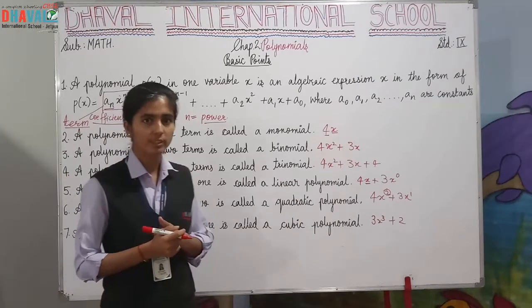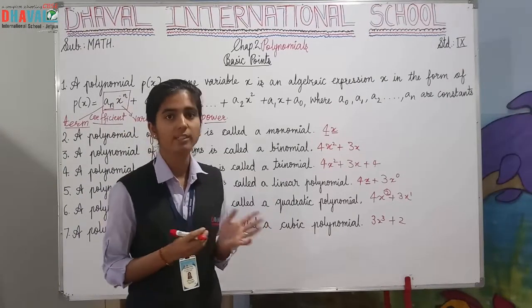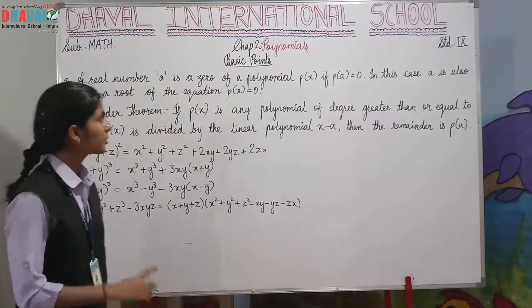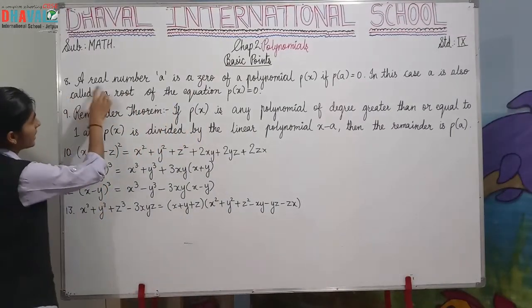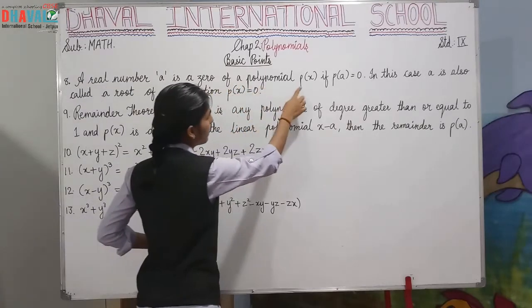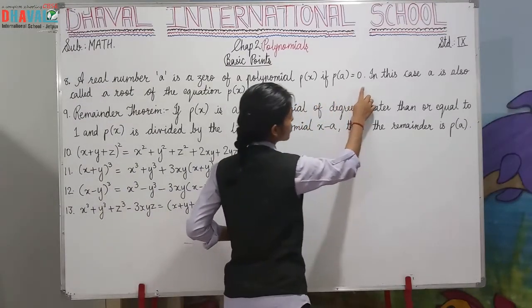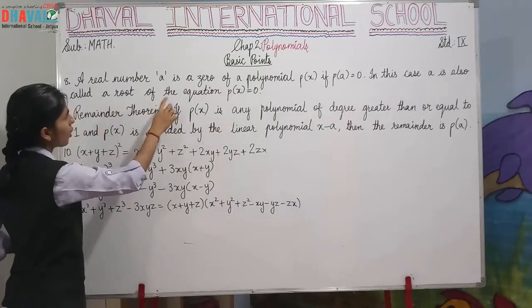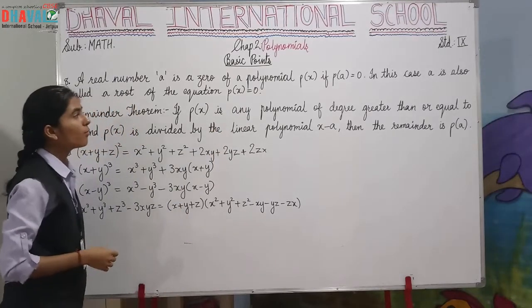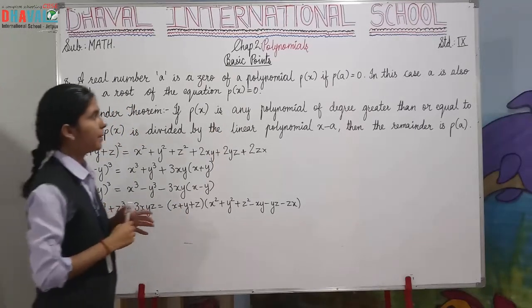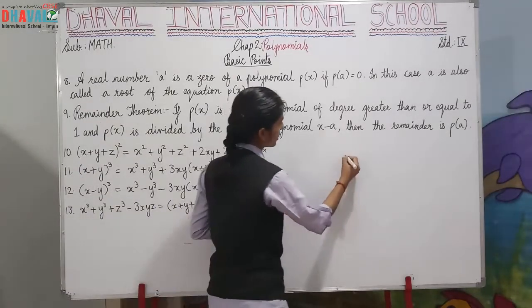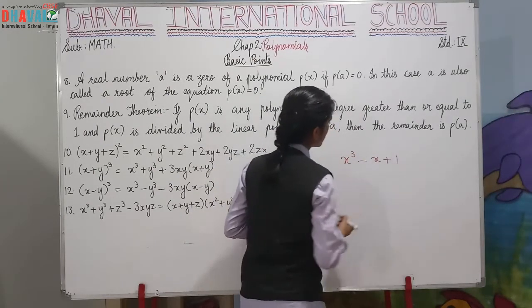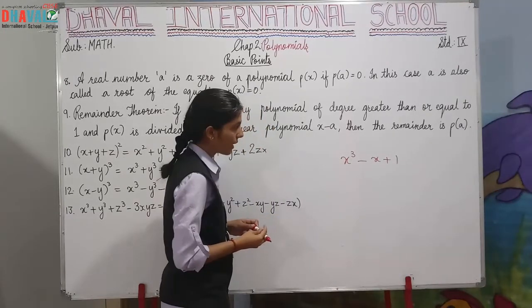Next, we are going to discuss theorems we will be learning in this chapter. A real number a is a zero of a polynomial P(x) if P(a) equals to 0. In this case, a is also called a root of the equation P(x) equals to 0.